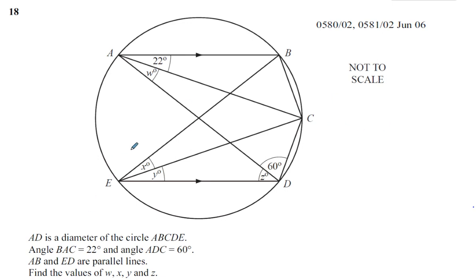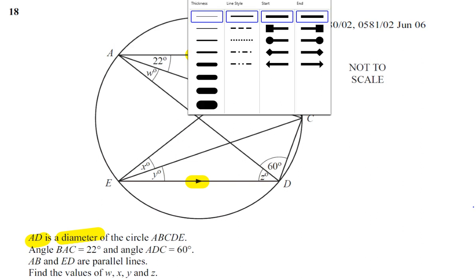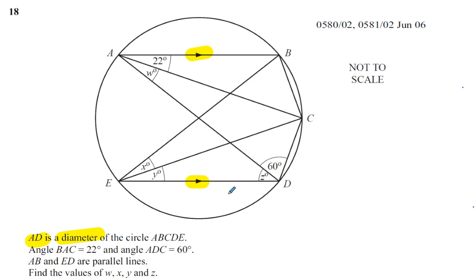We are told that AD is the diameter of the circle - that's important information. Angle BAC is 22 degrees, marked there already. Angle ADC is 60 degrees, which is also marked. AB and ED are parallel lines - that's very important. We're going to find the values of W, X, Y, and Z. Let's have a look.